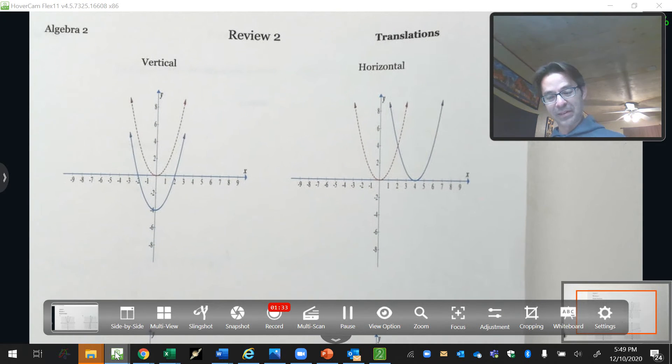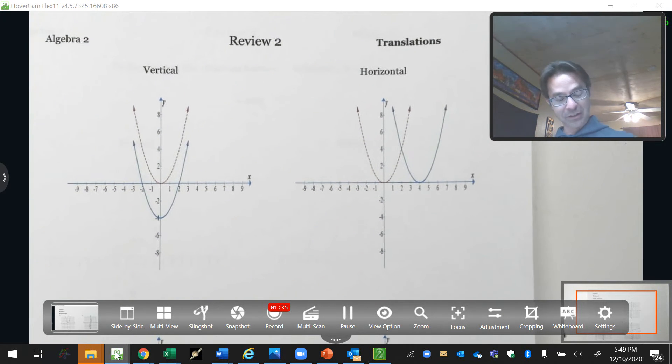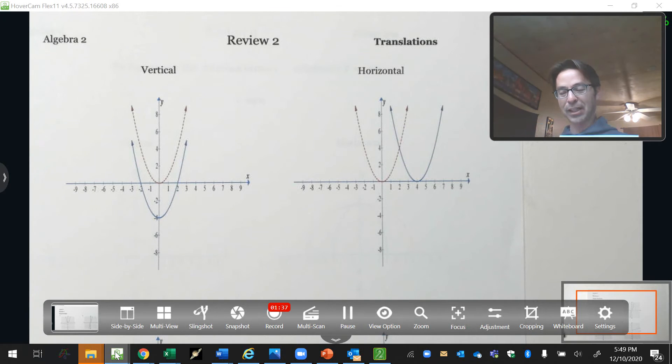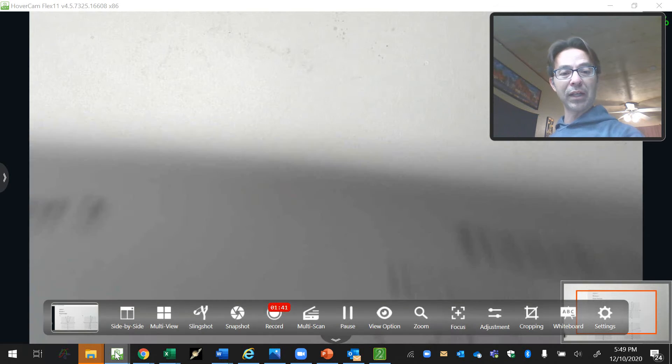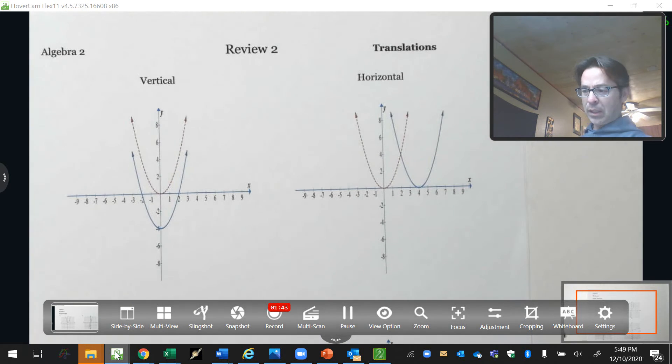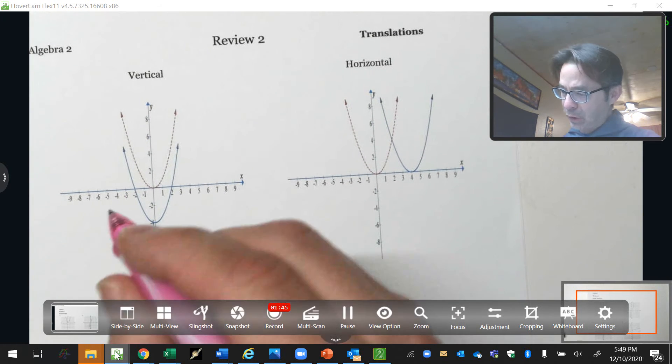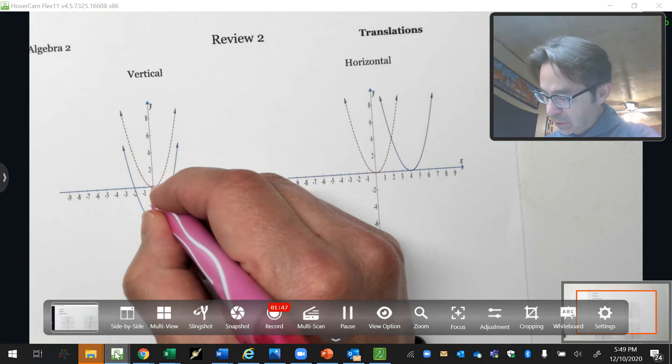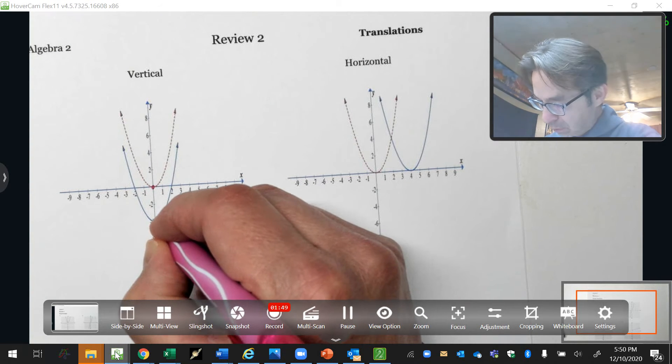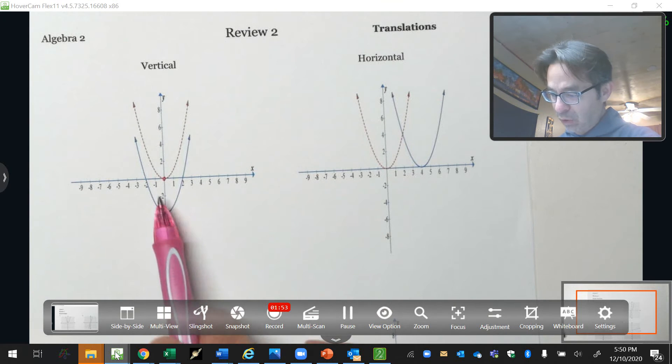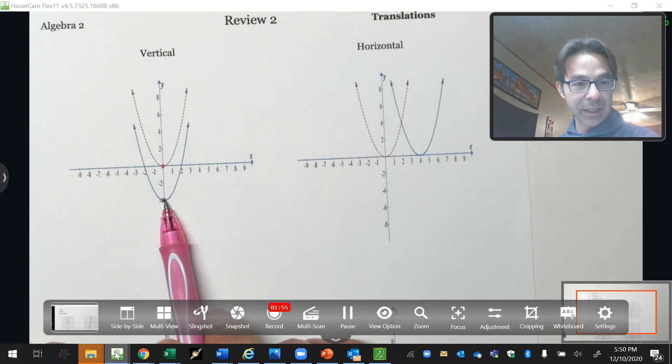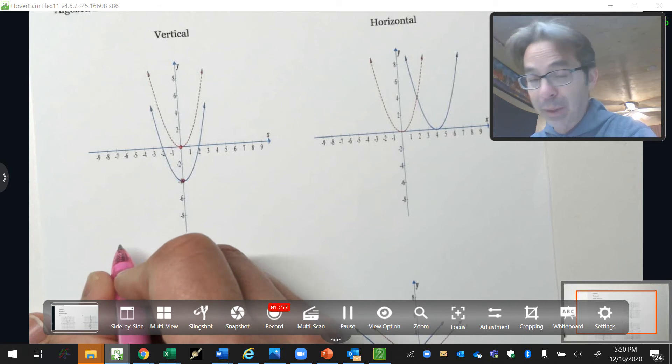One more time. A translation. The shape does not change, but it does move to a new location. So anyways, the quick way to do these is compare the vertex. It was at the origin. Now it is at negative four. I'm going to abbreviate it by the way.